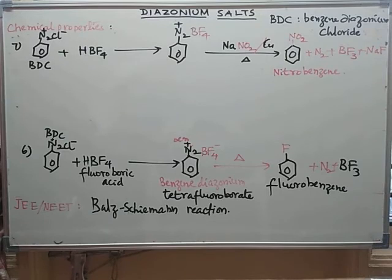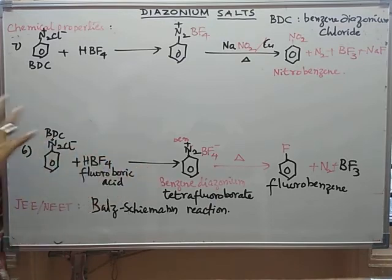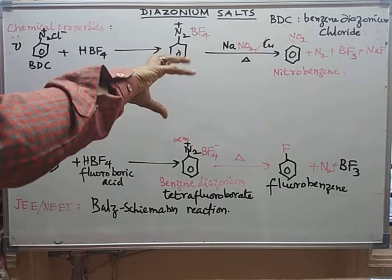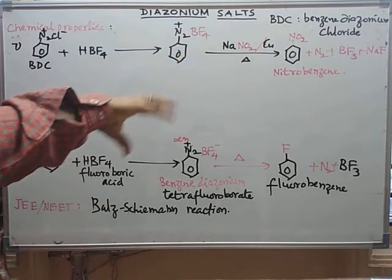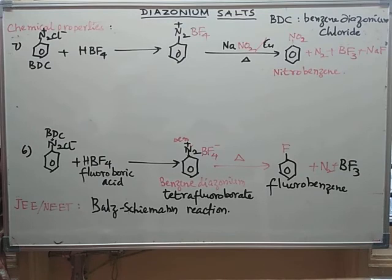This completes the reactions involving the removal of the N2 group from diazonium salts. The next topic to be covered is coupling reactions, where the N2 group is retained and joined with another compound.